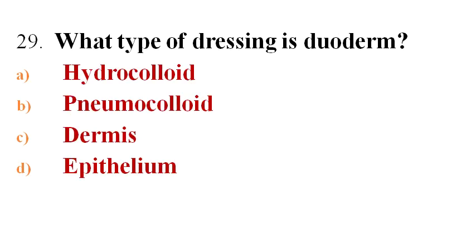Next question: What type of dressing is deodorant? Options A. Hydrocolloid, B. Pneumocolloid, C. Dermis, D. Epithelium.